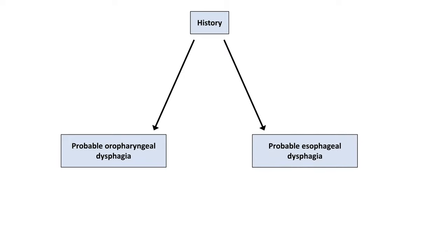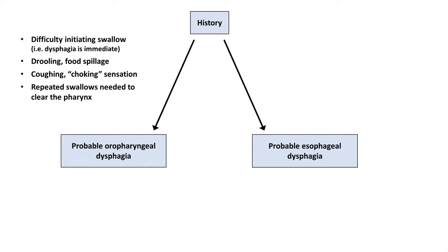Now how do we apply all this information to create an approach to diagnosis? The first step in such an algorithm is to use history to distinguish probable oropharyngeal dysphagia from probable esophageal dysphagia. Oropharyngeal dysphagia is suggested by difficulty initiating a swallow, meaning the dysphagia is immediate, if the patient reports drooling or spillage of food out of their mouth, a cough or choking sensation, if the patient requires repeated swallows to clear all the food out of their pharynx, and if the patient has a history of preexisting neurologic or myopathic pathology.